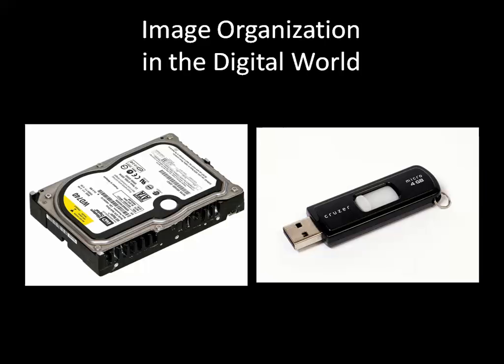Remember, we're not talking about individual photographs — we're talking about tiny electric impulses coded as ones and zeros stored primarily on magnetic media. How you organize this information within your operating system — whether Windows, Mac, Linux, or whatever — is entirely up to you. People have 1,000, 10,000, 100,000 images on their storage drives. But the real question is, how easy is it for you to find the one image you're looking for?